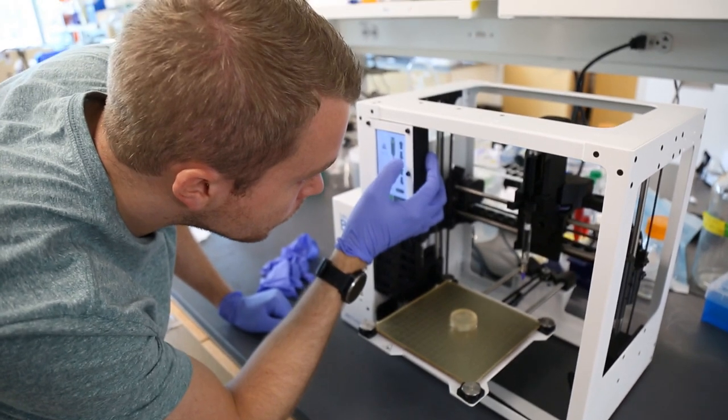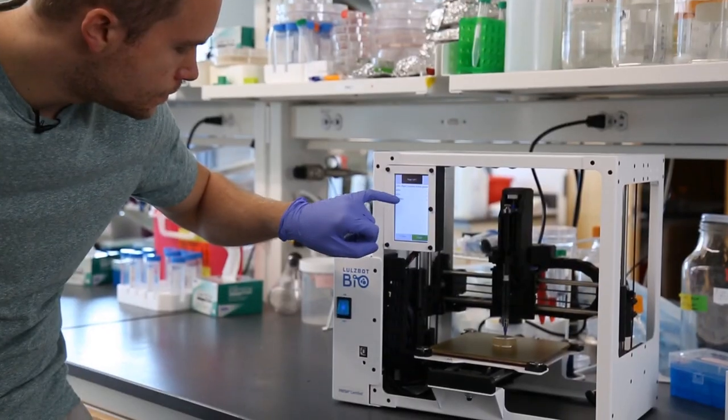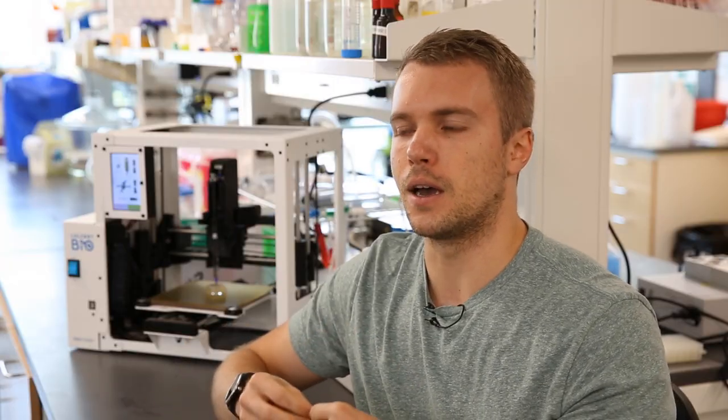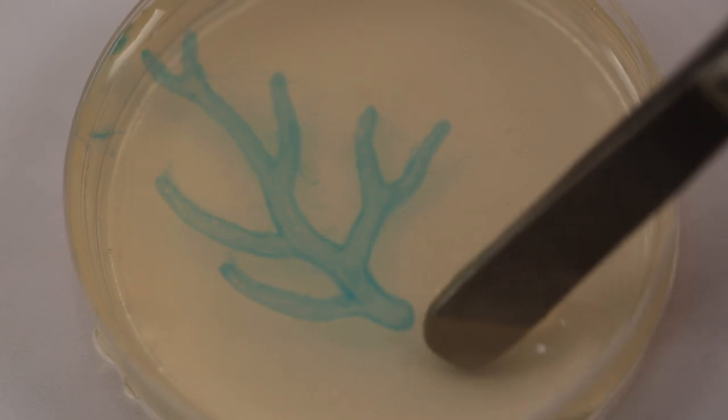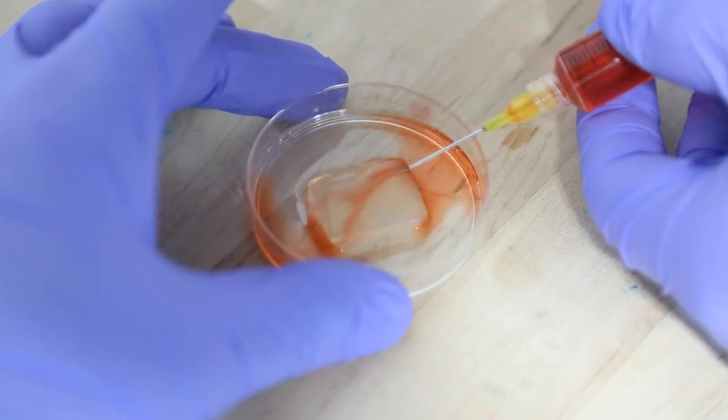We can print collagen and other materials directly, which enables people to reach the next level of bioprinting where we're making functional tissues. Things like artery trees—we can 3D print these basic tube networks that help keep cells alive.